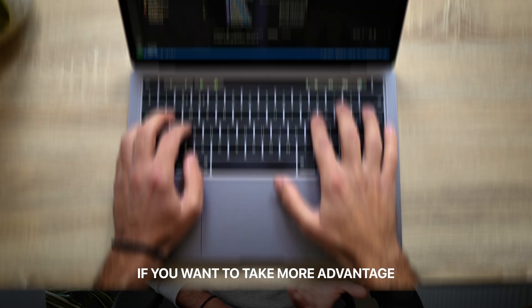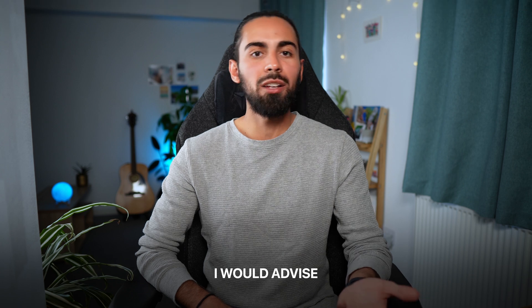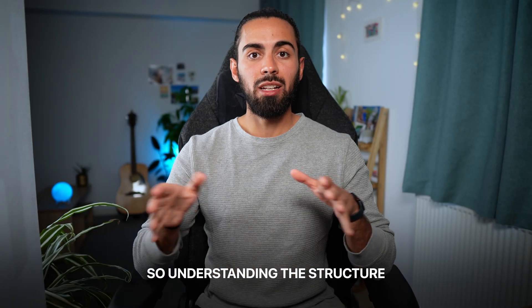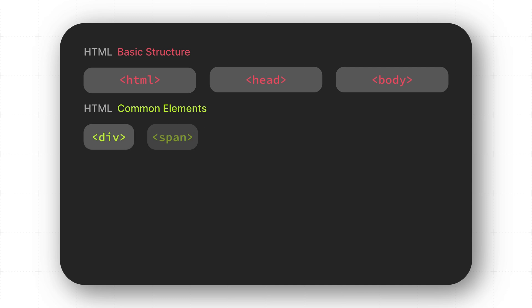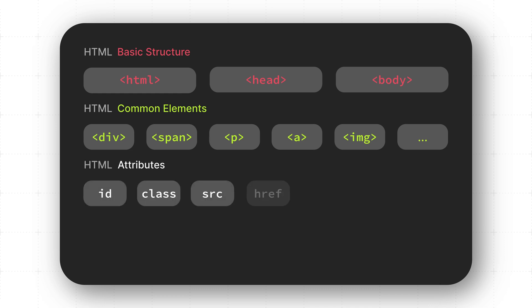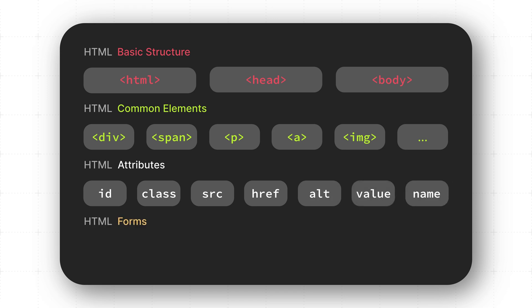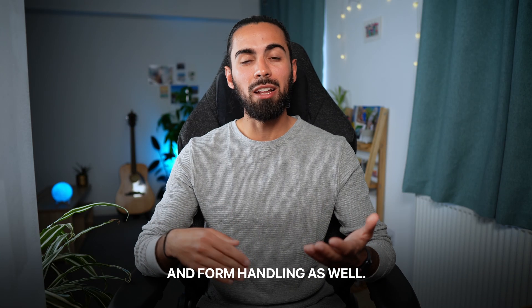If you want to take more advantage of JavaScript with your HTML and CSS knowledge, I would advise you to learn in HTML: basic structure — so the HTML, head, and body tags — common elements such as div, span, p, anchor, image, and form tags. You should also know attributes like id, class, source, href, alt, value, name and others. And lastly, forms — form elements like input, textarea, select, button, and form handling as well.